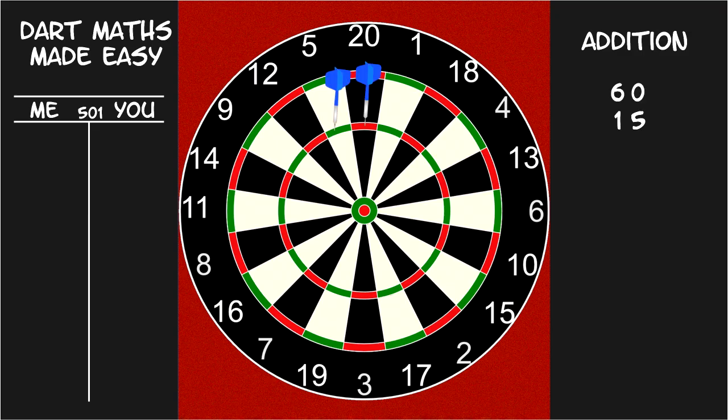First dart is a 60. Second dart is a 15. Now to be clear, the things I'm writing on the right hand side of the screen are not things you would physically write down. This side represents what you were trying to work out in your head. And the left hand side of the screen will show what you actually write.